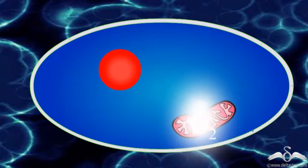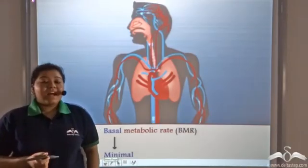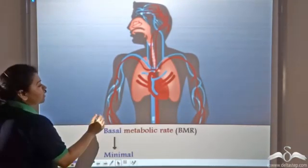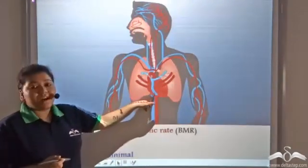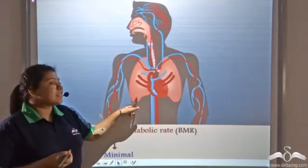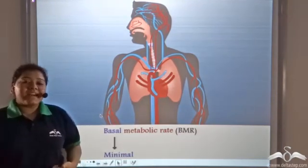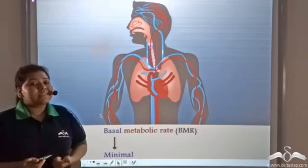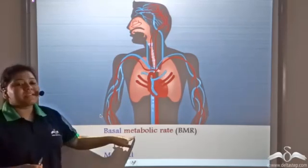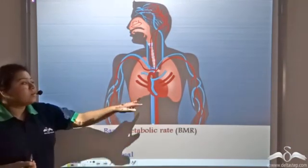This entire process is known as cellular metabolism. Now when that man was sleeping, there was still energy requirement for pumping of the heart and also for the inhalation and exhalation of his lungs. So this minimum amount of energy required to carry out all the living processes is known as basal metabolism, and the rate is known as the basal metabolic rate — the minimal energy required to carry out these processes.